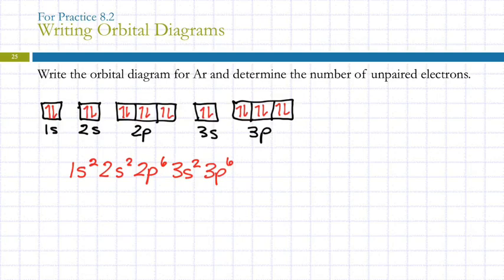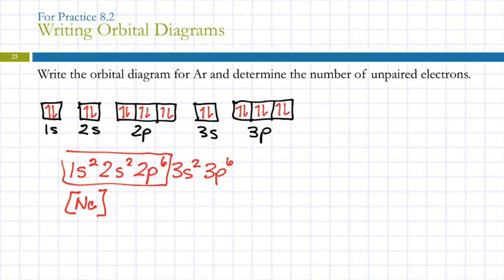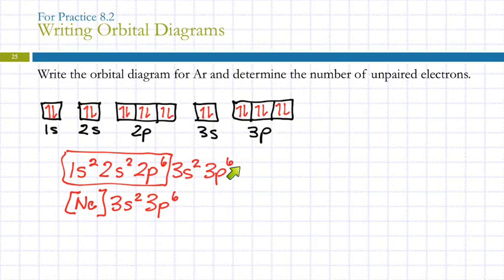For the noble gas configuration of argon: since argon itself is a noble gas, we go to the previous noble gas, neon, and write [Ne] 3s2 3p6. Neon has 10 electrons, plus 2 plus 6 equals 18 — the superscripts in your full electron configuration should always add up to the total number of electrons.